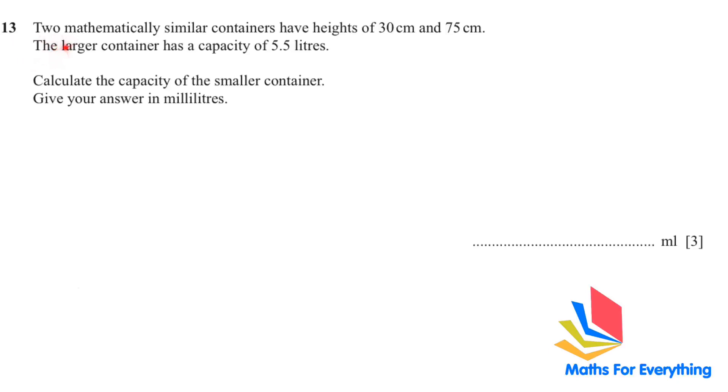Question number 13. Two mathematically similar containers have heights of 30 centimeters and 75 centimeters. The larger container has a capacity of 5.5 liters. Calculate the capacity of the smaller container. So this is the larger container and this is the smaller container. 75 centimeters and 30 centimeters they have heights. So the first thing we need to know that how did we get 30? We need 75 multiply by a scale factor we'll name it as k gives us 30. Therefore k equals 30 divided by 75. This is for height.